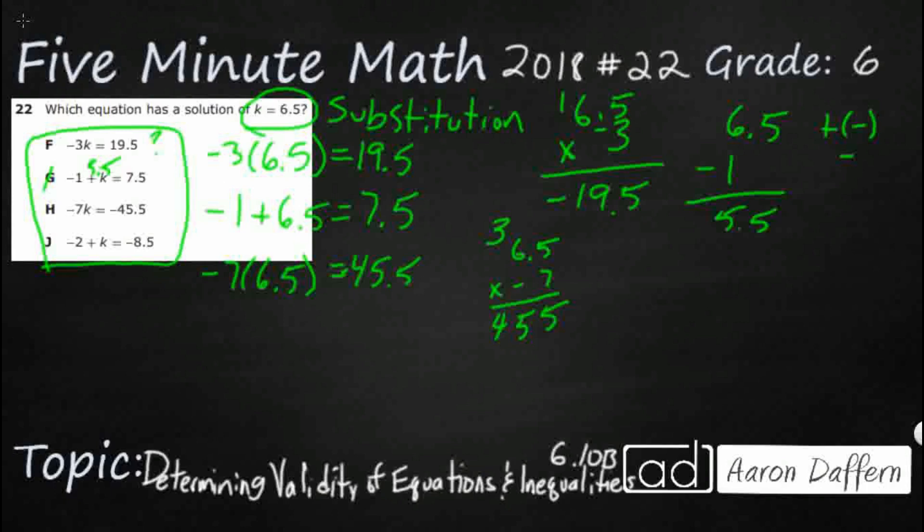So that's 45.5, put a decimal there, and put a negative there because it's a negative times a positive. Negative 45.5. Well that looks like it works. Well that's going to be a problem because I thought F works.